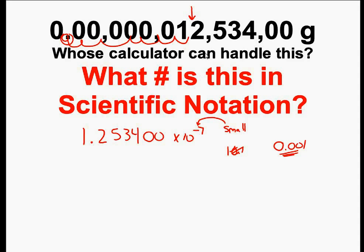Once again, you're going to notice the number of sig figs. When I have a decimal, these leading zeros are not significant. So the sig figs I had were 1, 2, 3, 4, 5, 6, 7 — and I have those same seven sig figs right here in my scientific notation answer. So in chemistry, it's important that you do pay attention to your sig figs as well.